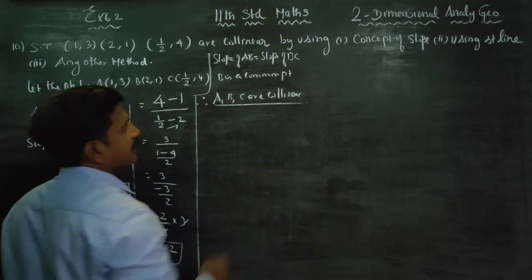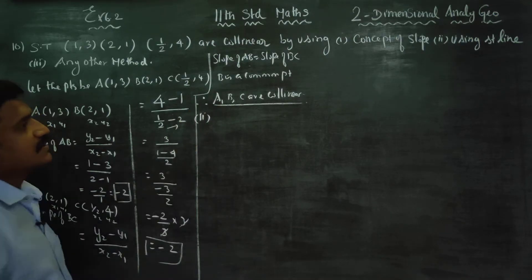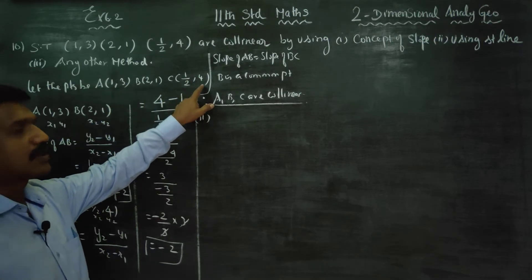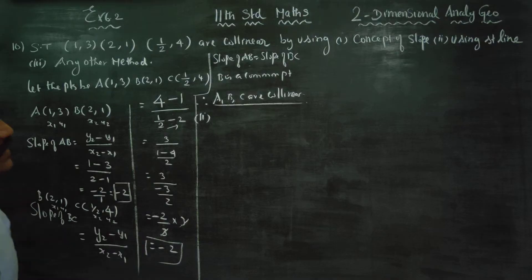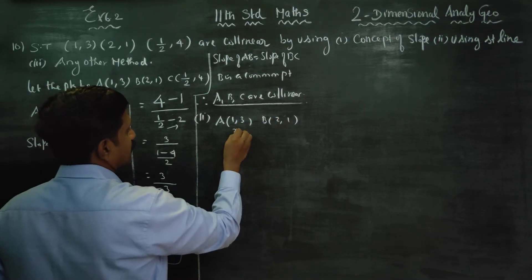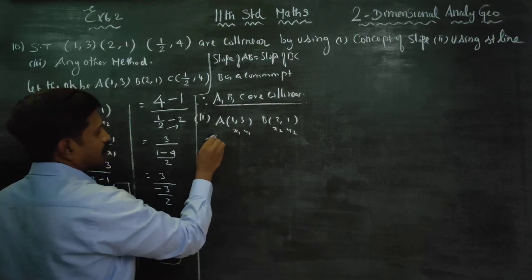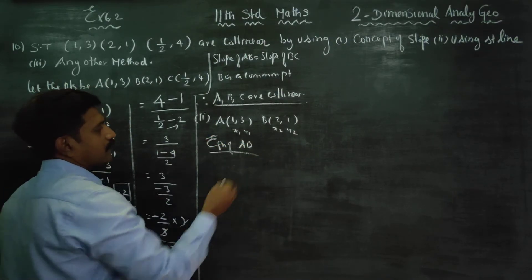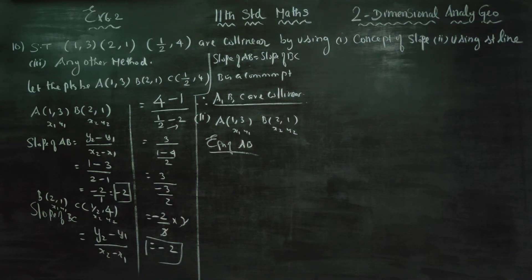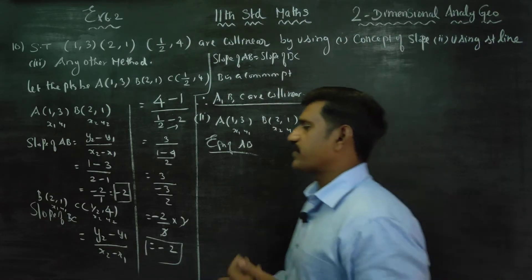This is the first method. The second method is using straight line. You have to find the equation of AB and substitute the point C(1/2, 4). If it satisfies the equation, then the given points are collinear. First, I am going to start with A(1,3) and B(2,1). Let these be x1, y1, x2, y2. I am going to find the equation of AB using the straight line concept. You find the equation of a straight line, then substitute the third point. If it satisfies the equation, that means the points are collinear.